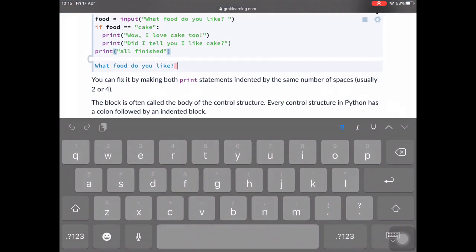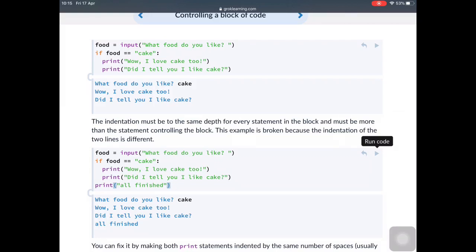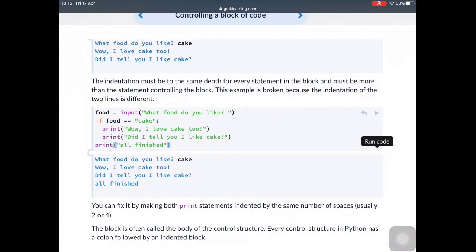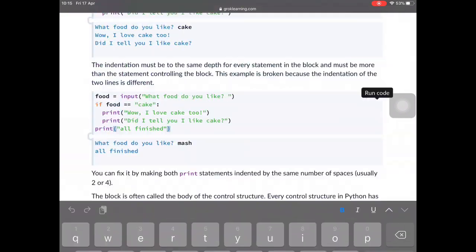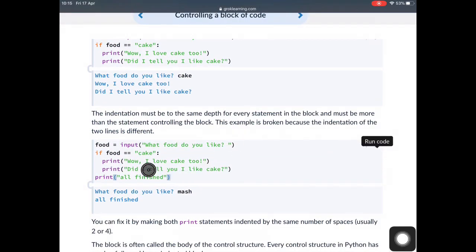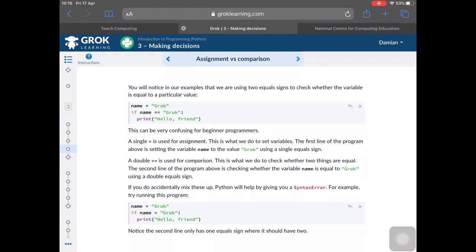So if I add an extra line at the back which isn't indented, it's back at the same level as the if, that should happen after the if has been run. So this time, if I type cake, then I should get all three lines. I should get wow, I love cake, did I tell you I love cake, and all finished because that comes after the if. That will run automatically. And therefore, if I was to type in mash like I did last time, this time I should get something because I put an extra line in that says all finished. So if food equals cake after the input and I put mash, so does food equal cake? No. So I have to skip those two lines and go to the next one, which is all finished. So that's the one that it does print, but it ignores the others.